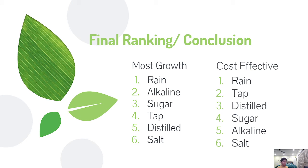Here is a ranking of most growth and most cost efficiency. Rain is the best overall because it grew the most and it is free. The cost-effective rankings for the others were based on how much they cost, with tap number two, followed by distilled and sugar, because they cost more to obtain.